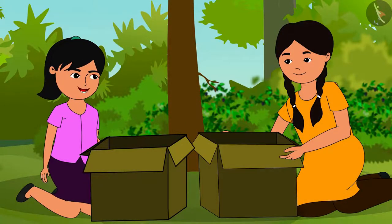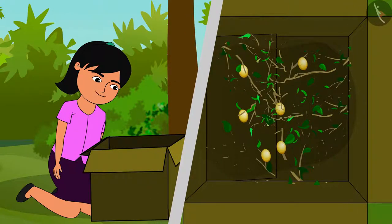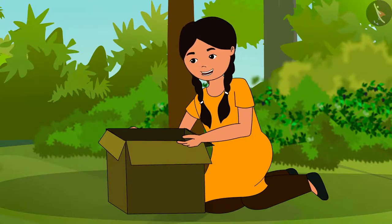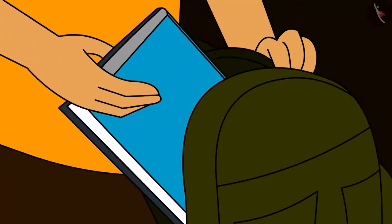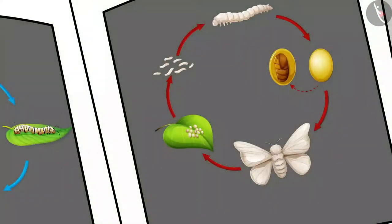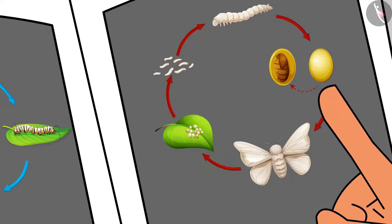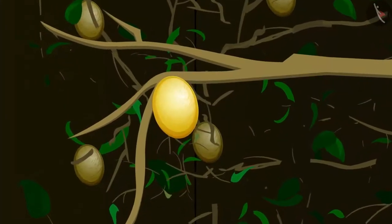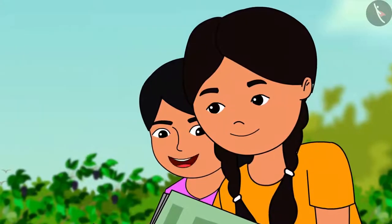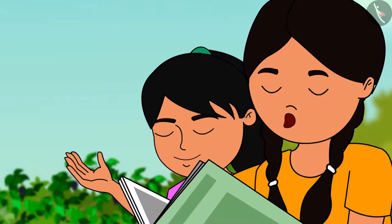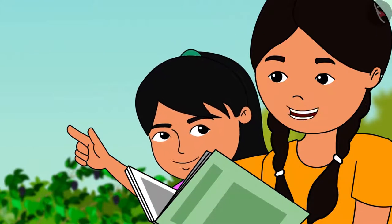After two more weeks, Reena exclaims: 'Look Didi, the caterpillars in my box have become like a cocoon!' She recalls learning in grade four about the life cycle of a butterfly — that caterpillars transform into cocoons. Maya gets her science book and shows a picture of how a silkworm makes a net around itself and transforms into a cocoon. Reena notices the cocoons have attached themselves to the stems, asking if this is another stage in their life cycle.